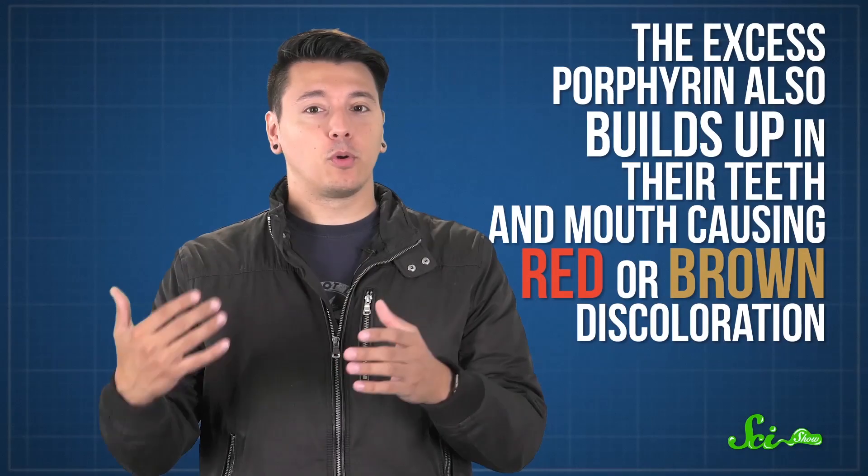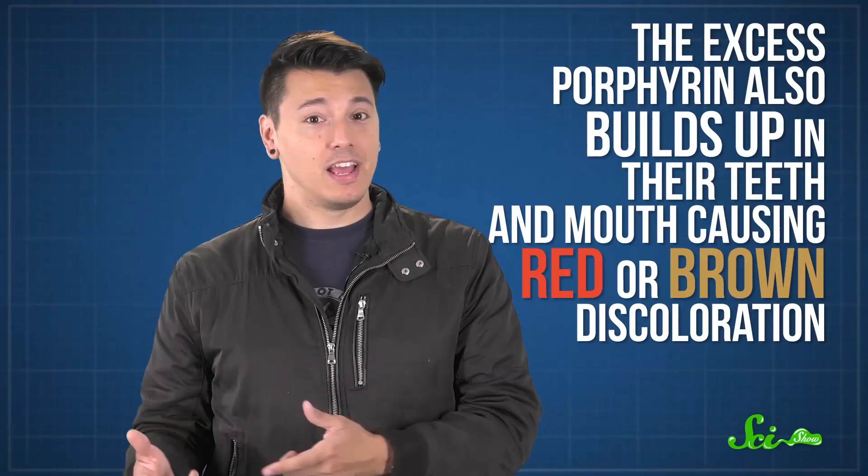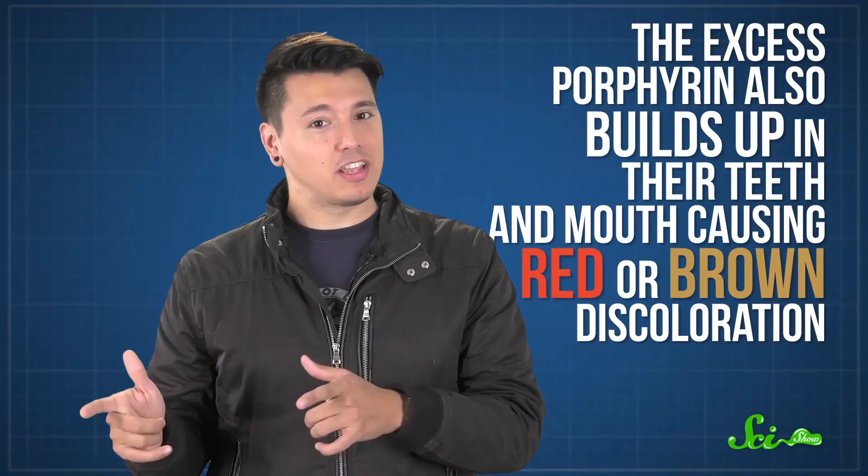For one, it makes their skin really sensitive to sunlight, and they get painful rashes and blisters, but only when they go outside. The excess porphyrin also builds up in their teeth and mouth, causing red or brown discoloration. It can even look a bit like they've been drinking blood.